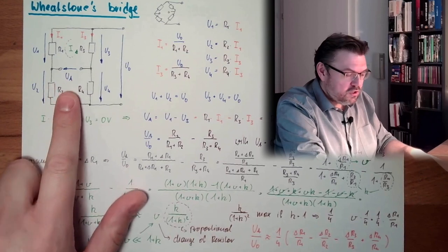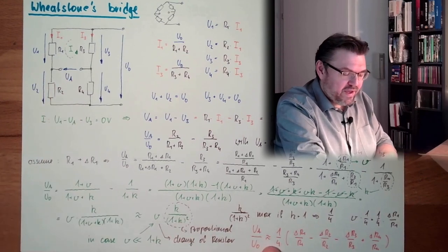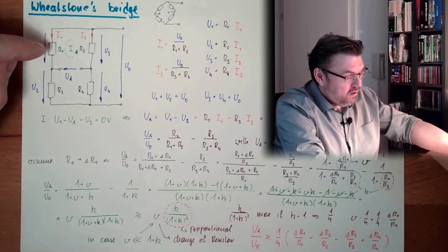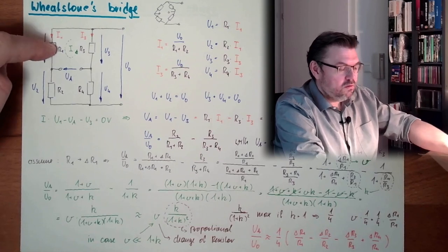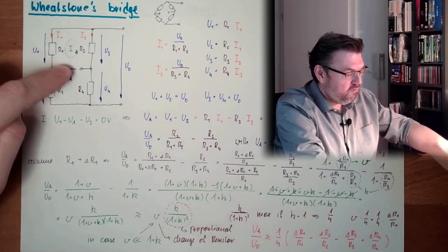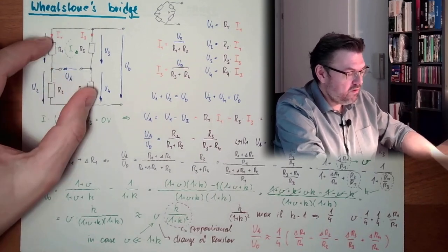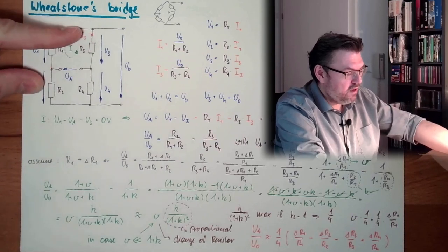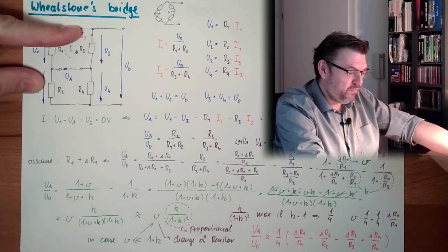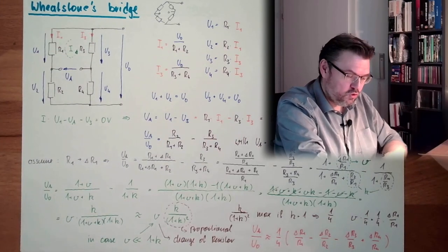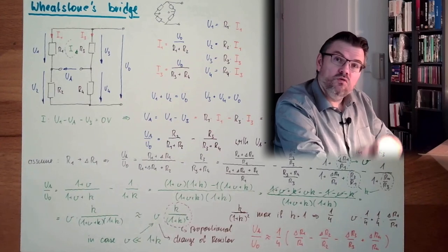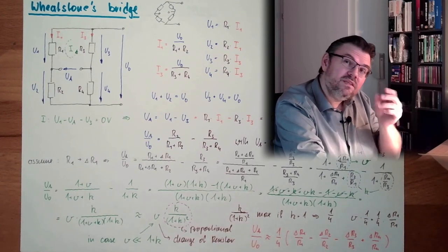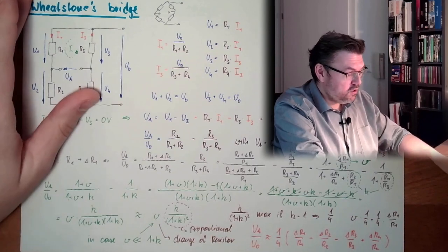The output voltage is reflecting the change of resistor 1 and the change of resistor 4 positively, and those two changes for resistors 3 and 2 negatively. This was always compared to the original value — this delta R was just a tiny change.